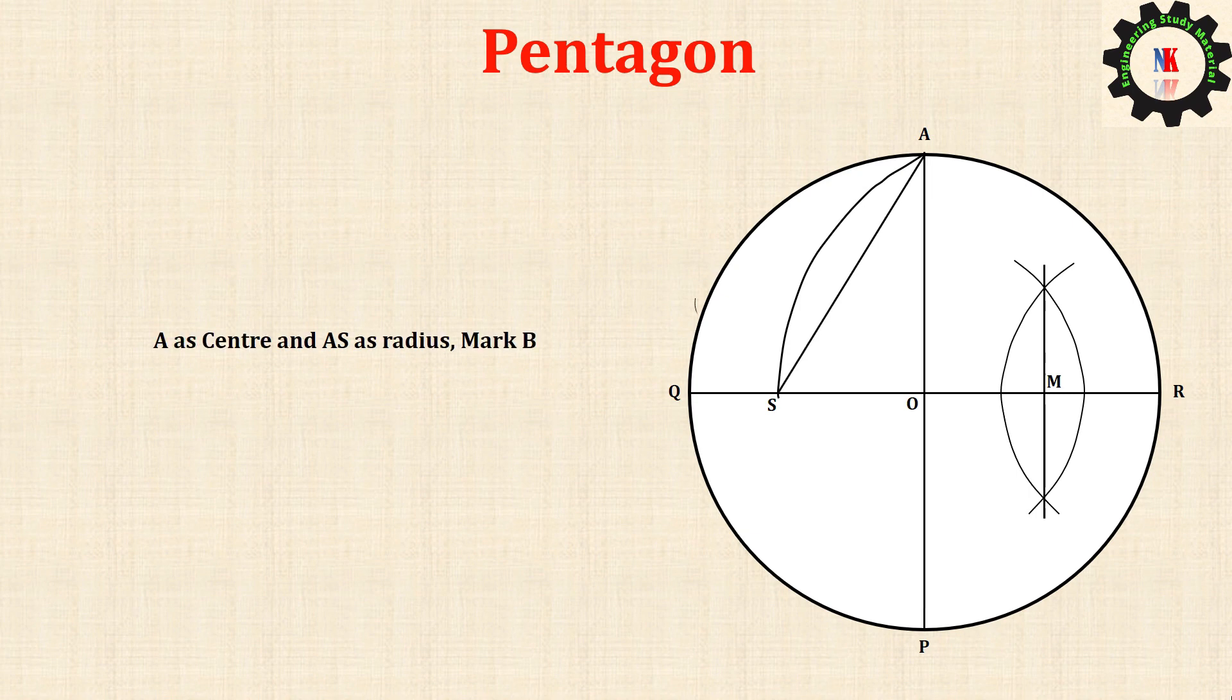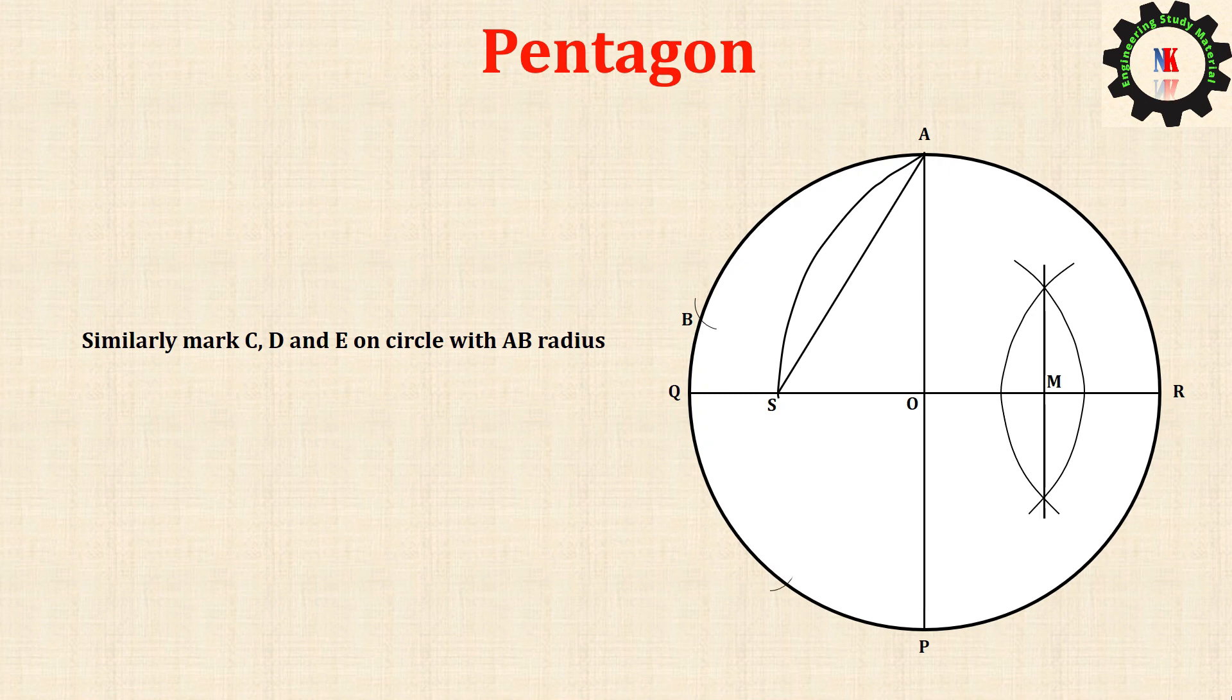A as center and AS as radius, mark B. Similarly mark C, D, and E on the circle with AB radius. Join A, B, C, D, E to obtain the pentagon.